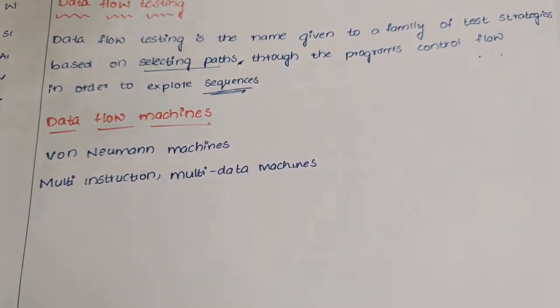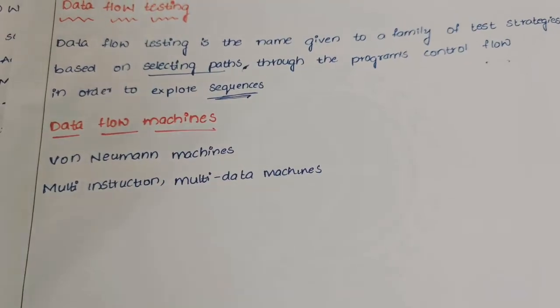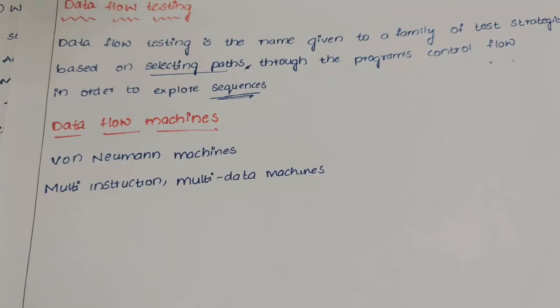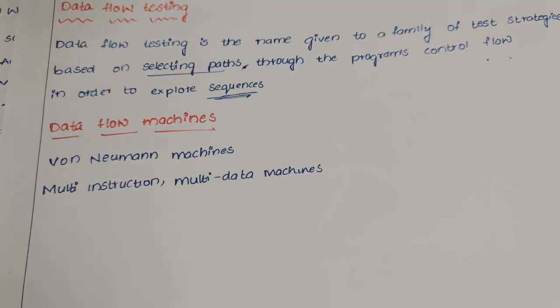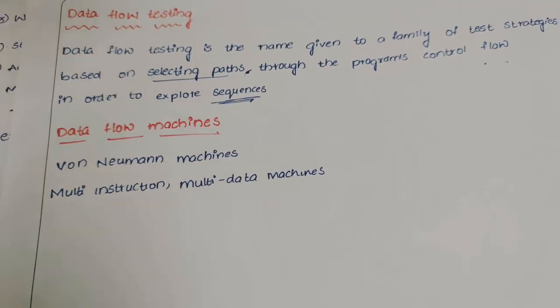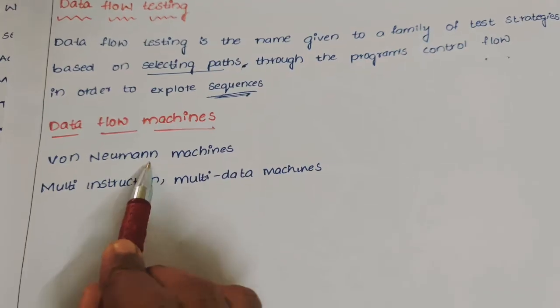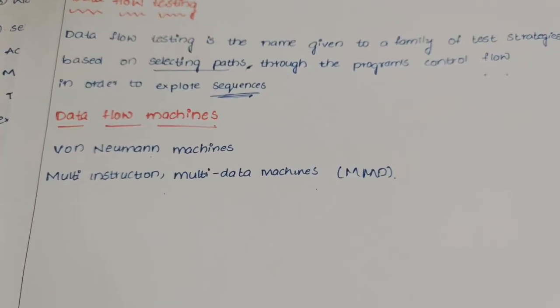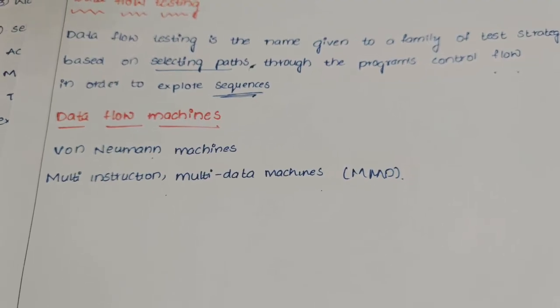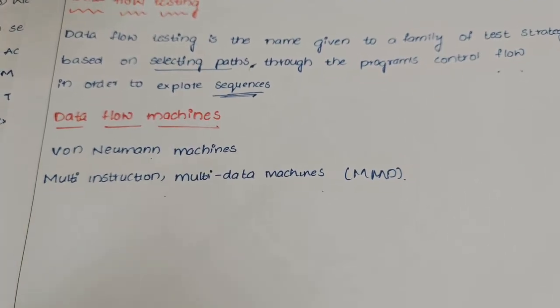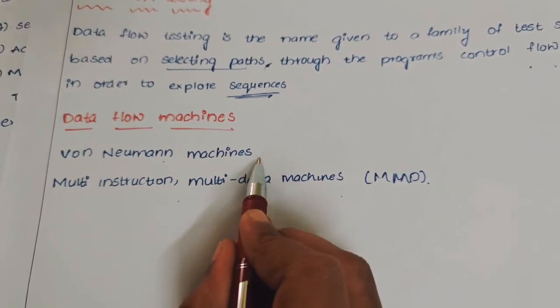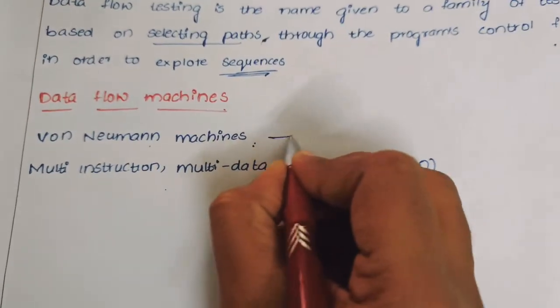In data flow testing we have two data flow machines. First, Von Neumann machines, and second, multi-instruction multi-data machines (MIMD). These are the two types of machines which have different architectures. Von Neumann machine architecture is most commonly used.